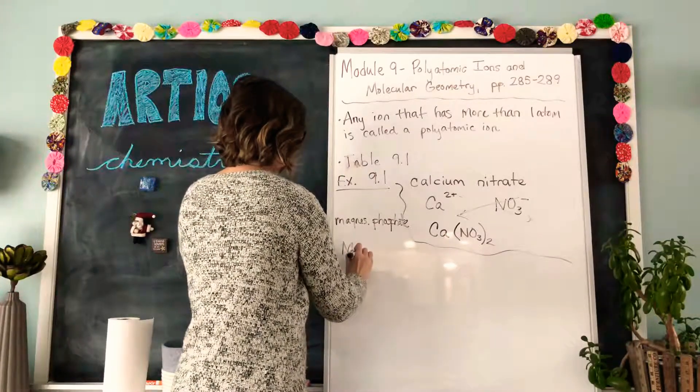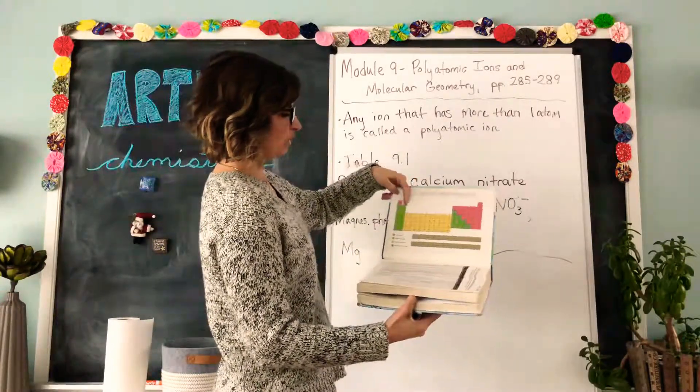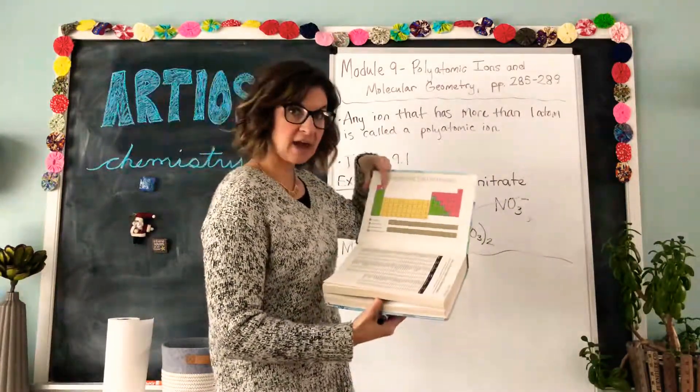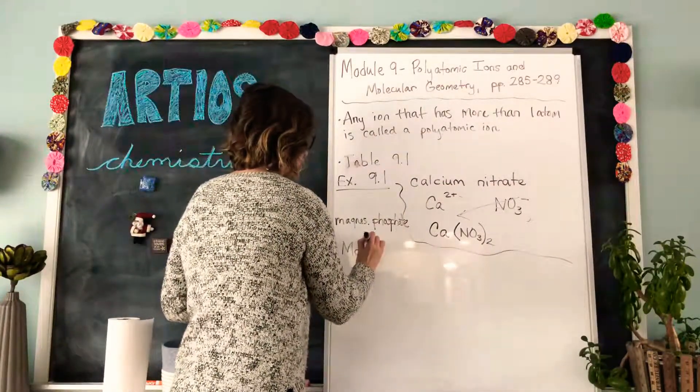Ran out of room there a little bit. Magnesium is Mg, and I think it's in the first column. Let's see. Nope, it's in the second column. It's in the second column which means it has a two plus charge. Magnesium is two plus.